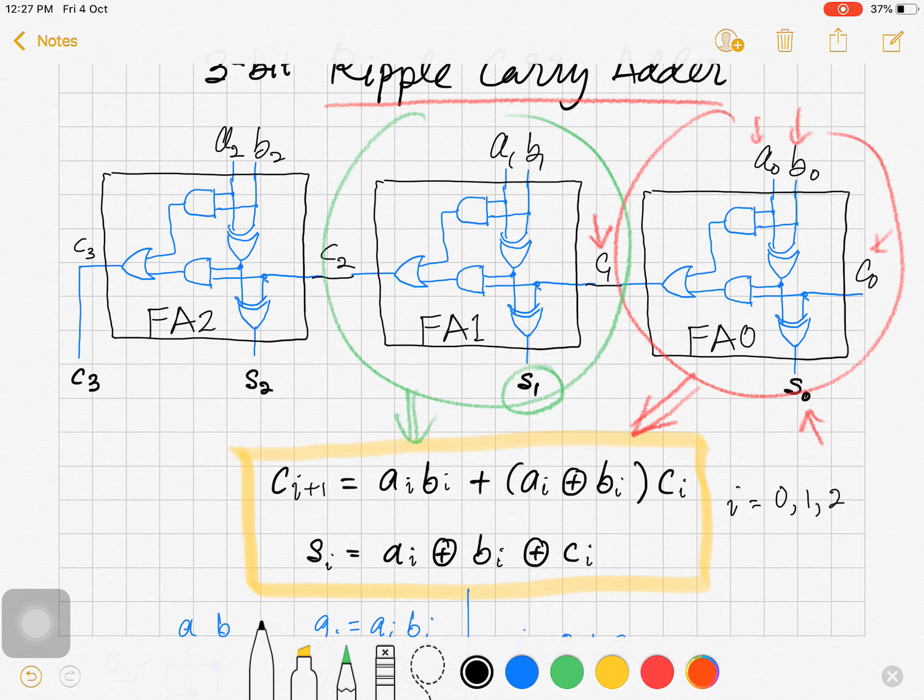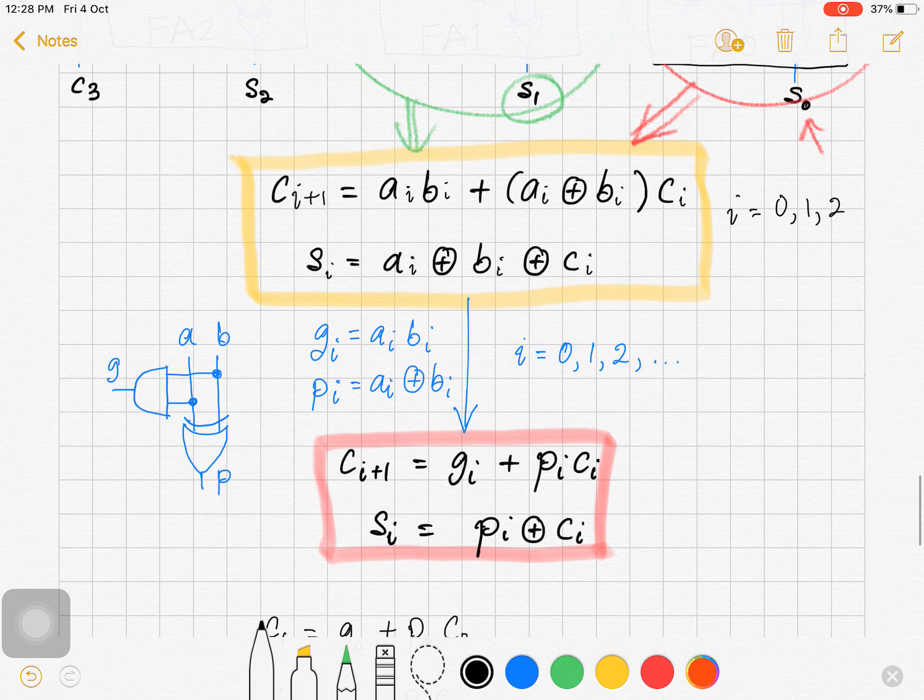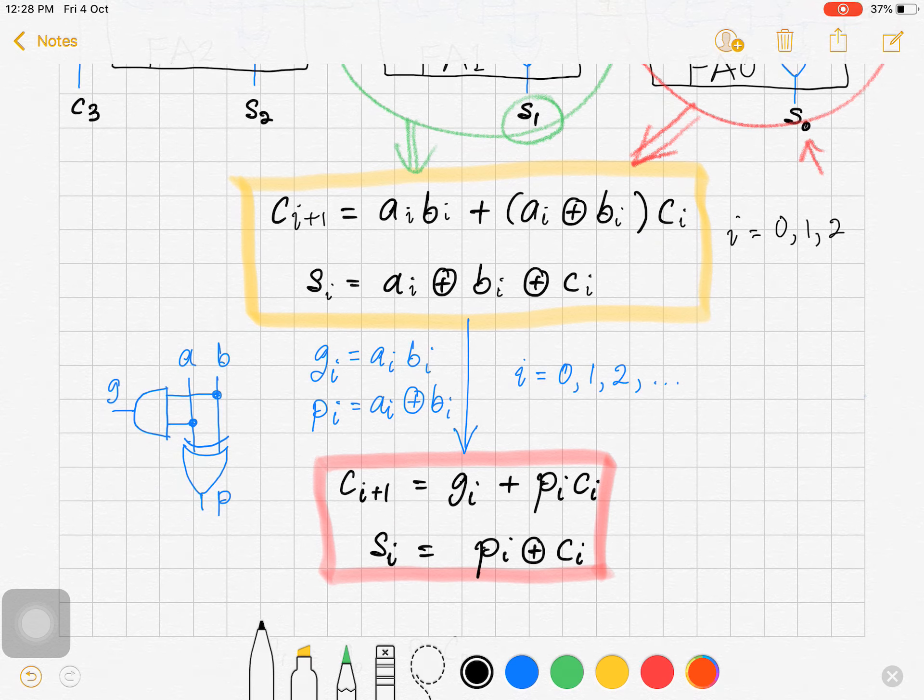To simplify things, we introduce two variables, namely G and P. G and P, in which G equals A and B, and P equals A XOR B for the respective i. So we have a new representation of the formula for the full adder units, which is shown in this red box: C(i+1) equals Gi or Pi Ci, and Si equals Pi XOR Ci. That is, we substitute this equals Gi and this equals Pi.